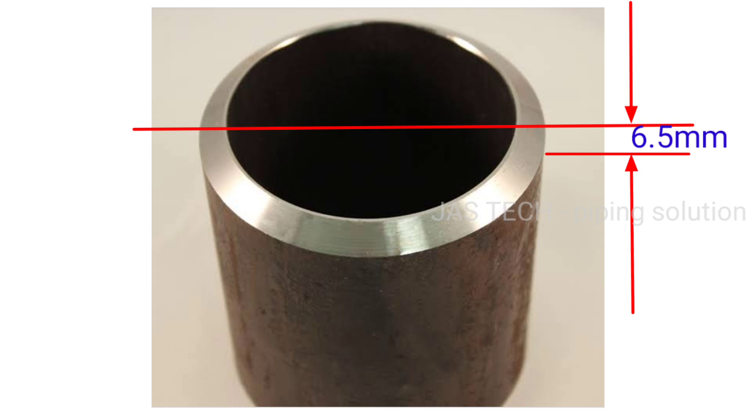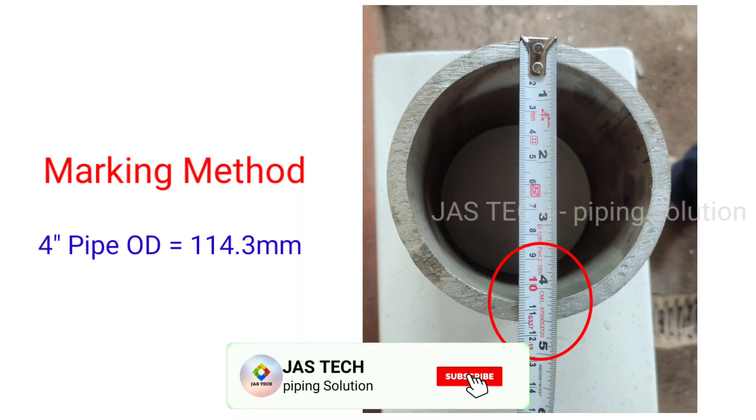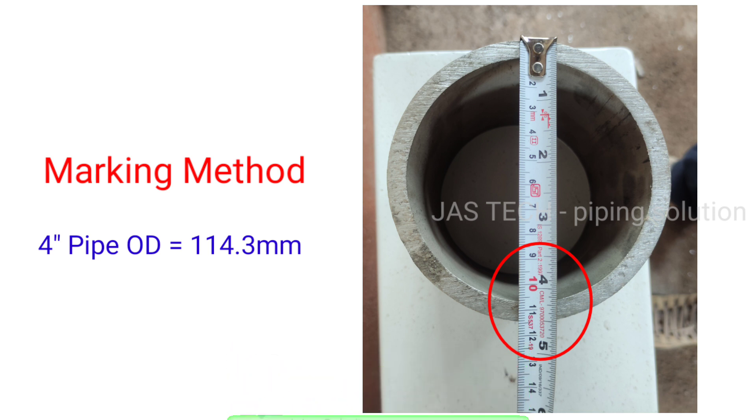Marking method: By using measurement tape, check the OD of the pipe. 4 inch OD equals 114.3 mm.